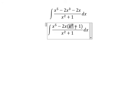So we have x to the power of 2 plus 1. We can divide with x to the power of 2 plus 1 and you will get negative 2x.